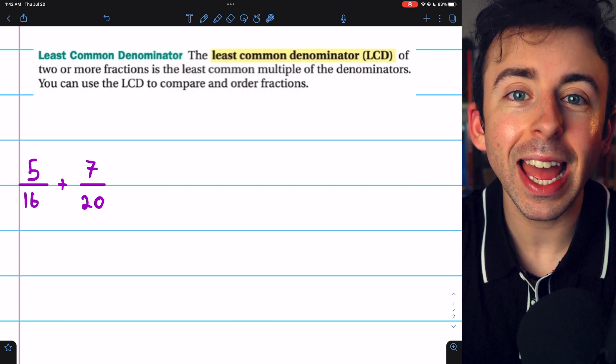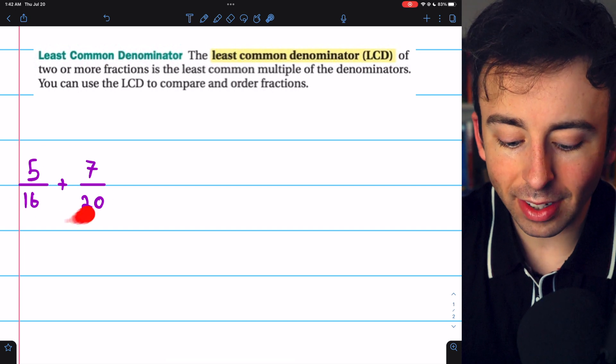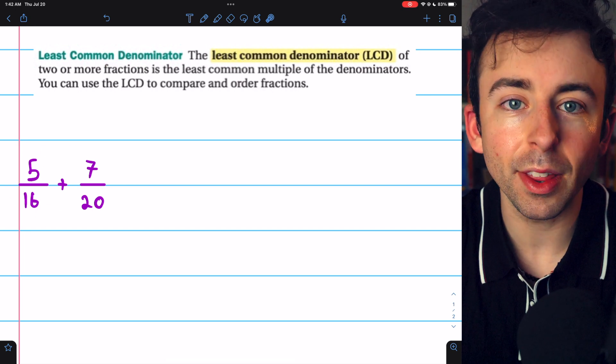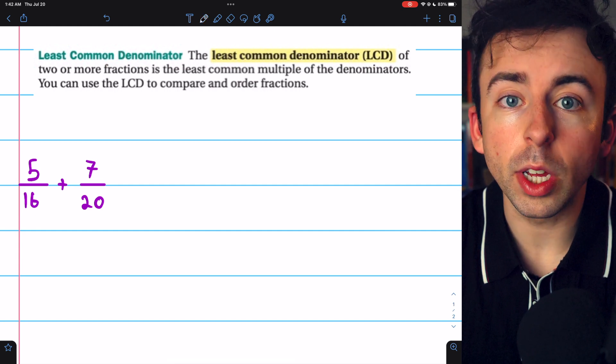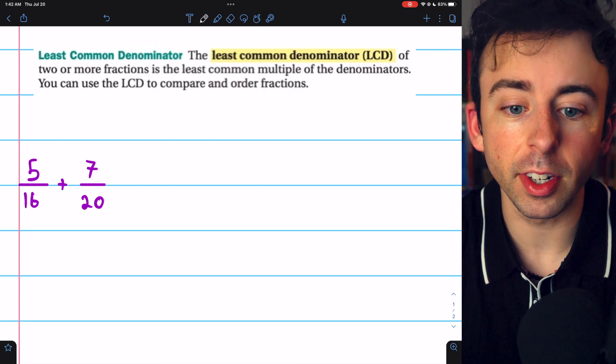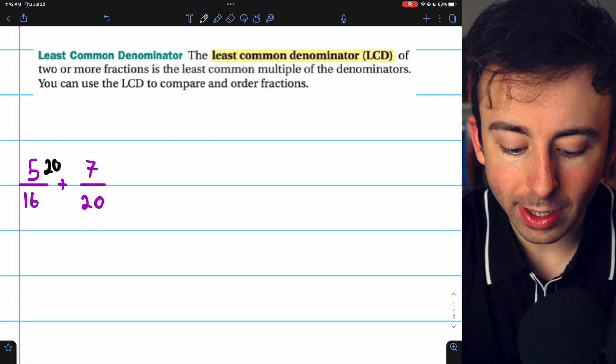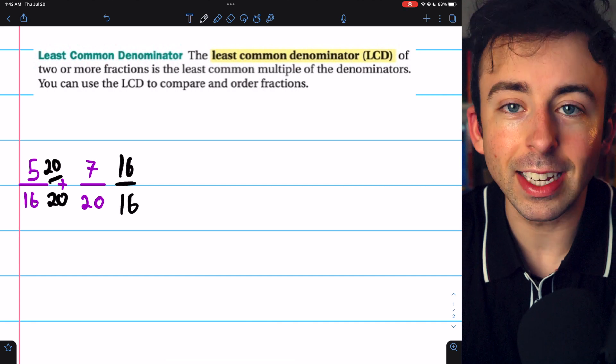This is often used for us to get fractions to have the same denominator. Then we can compare them and add them together easily. For example, to do 5 sixteenths plus 7 twentieths, we need to get common denominators. One strategy you can always use is to just multiply the fractions by each other's denominators.